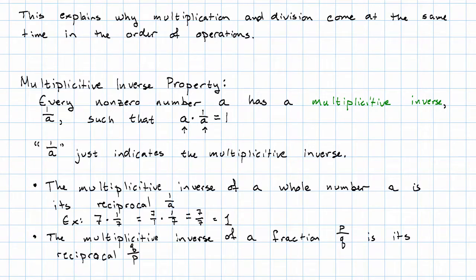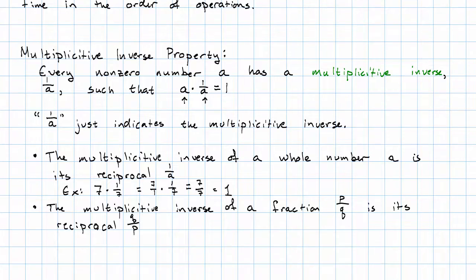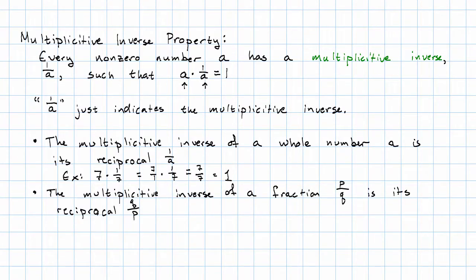The multiplicative inverse of a fraction, which we might write as P over Q, is its reciprocal Q over P. So, for example, three-fifths times its reciprocal, five-thirds, three times five is 15, five times three in the other order is also 15, and again, yes, that's one.